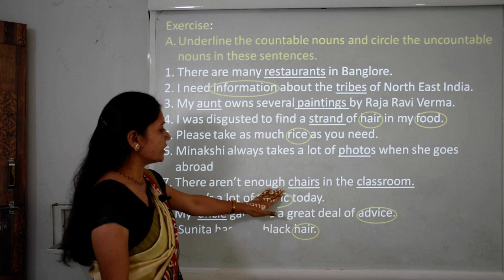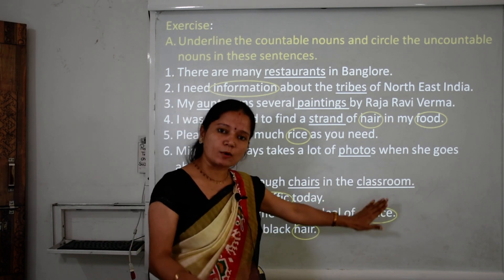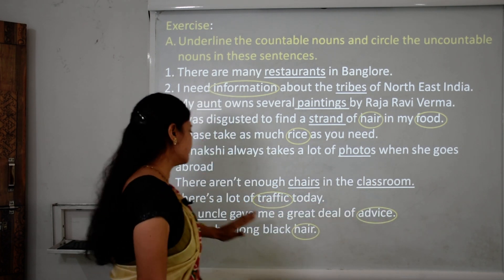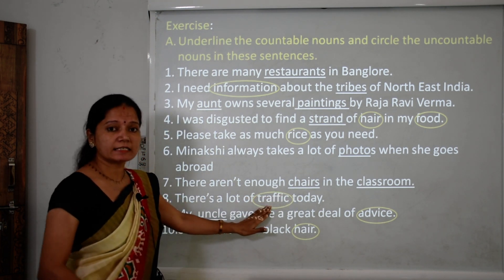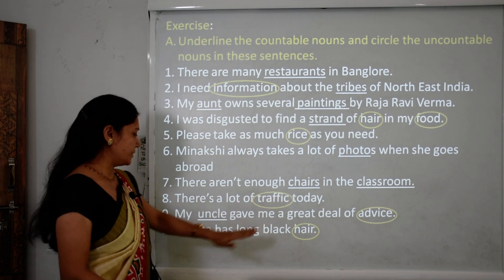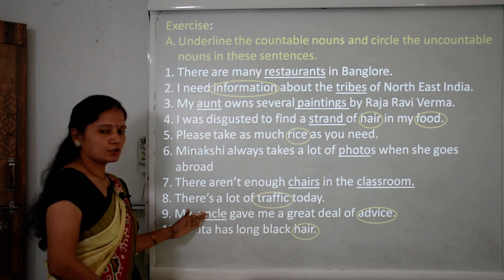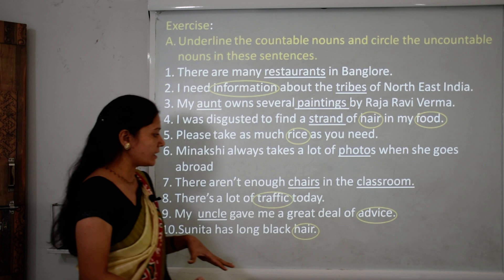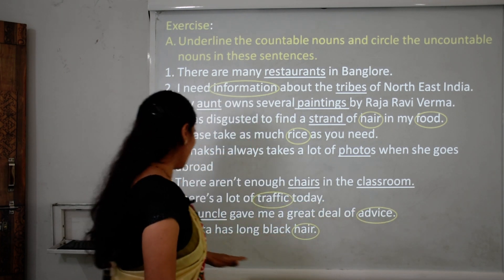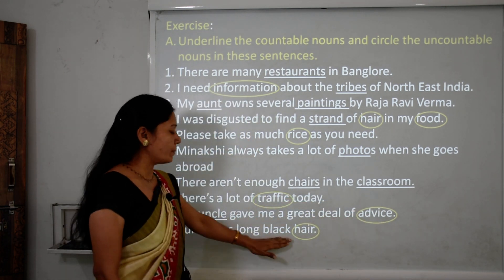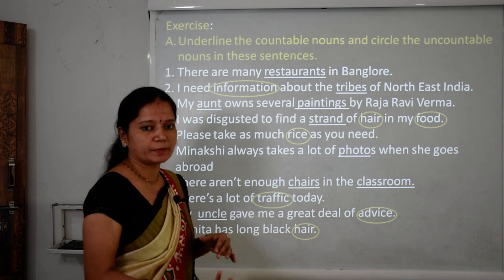Sentence 7: 'There aren't enough chairs in the classroom.' Chairs and classroom are both countable nouns. Sentence 8: 'There is a lot of traffic today.' Traffic is an uncountable noun. Sentence 9: 'My uncle gave me a great deal of advice.' Uncle is countable; advice is uncountable. Sentence 10: 'Sunita has long black hair.' Hair is also an uncountable noun.